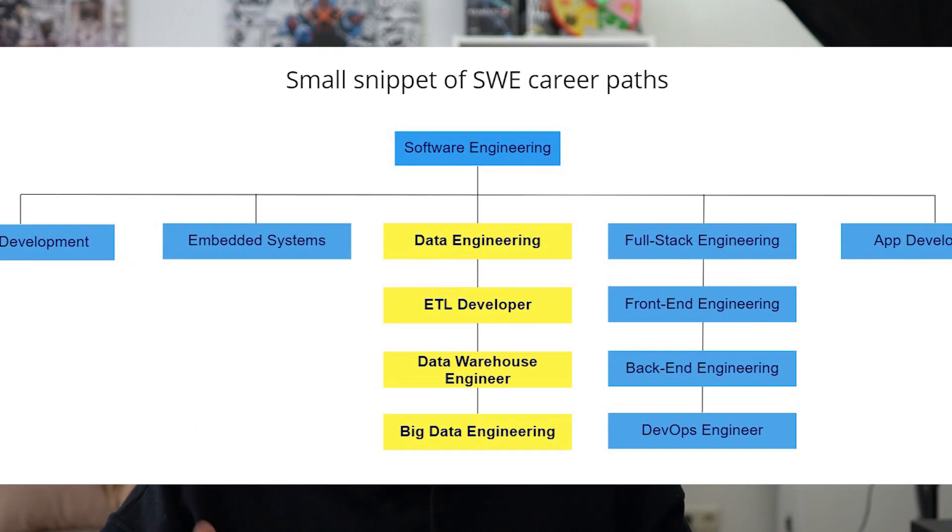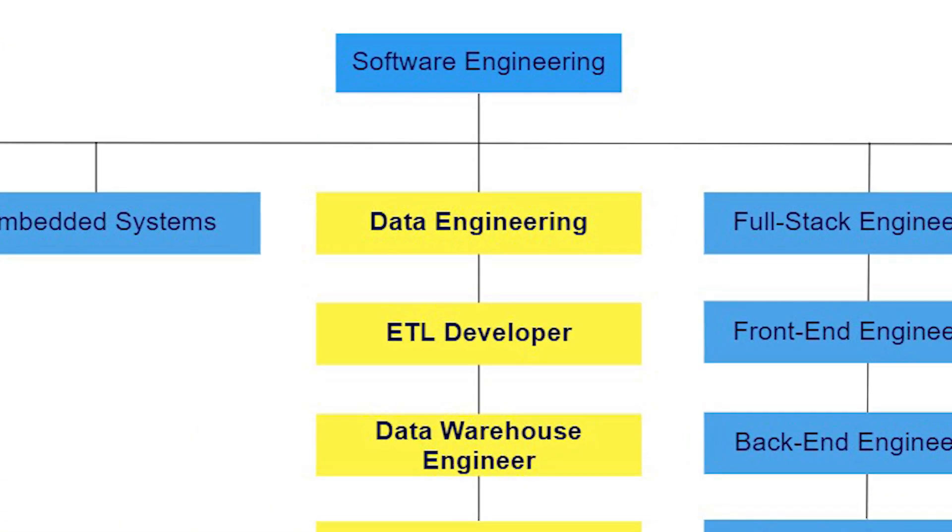Let's get started with the definition of what data engineering is. Data engineers are not data scientists — that's the first thing you should know. The biggest misconception about data engineering is that it's closely related to data science. Simply put, data engineers are specialized software engineers, and they focus on making data available for data scientists, data analysts, or front-end engineers so they can work with it.